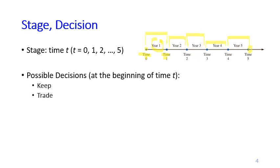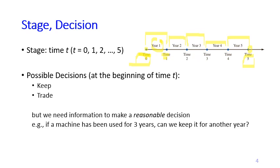At each stage, with the exception of time zero and time five, we have two possible decisions: keep the machine we have, or trade the machine for a new one. However, we need information to make a reasonable decision. For example, if at the beginning of a particular time point T you have a machine that has been used for three years, can you keep it for another year? According to the problem, no. So we need to know the age of the machine — that is the condition — such that we may make a reasonable decision. If the machine has been used for three years, the only possible decision is to trade it for a new one.